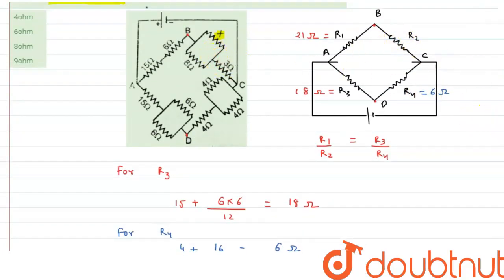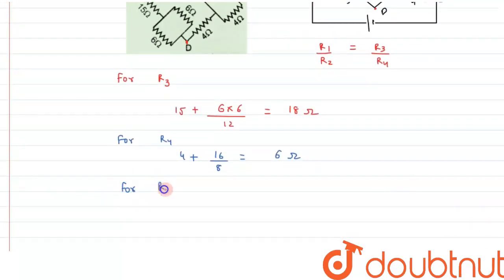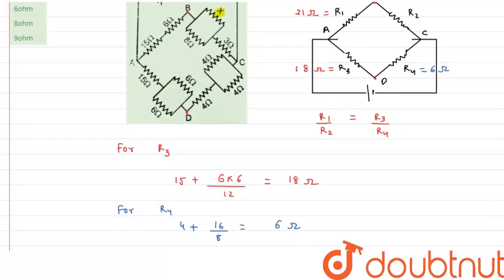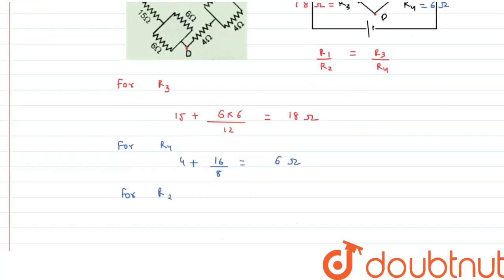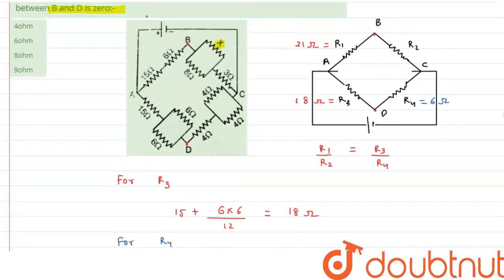And finally we have the R2. For R2 we can write, this can be written as 3 plus 8 into X, 3 plus 8X by 8 plus X. So this is what the value of R2 we are getting.